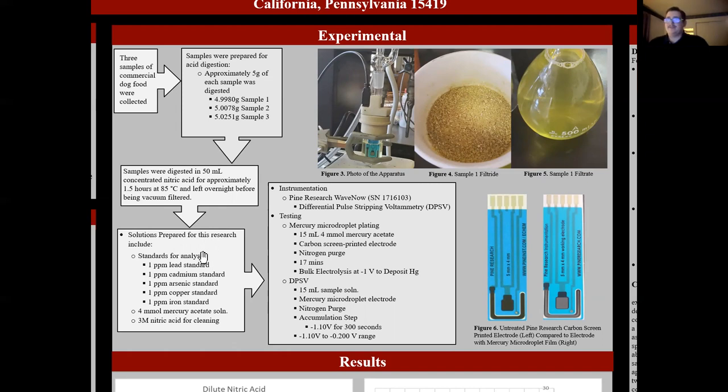Solutions were then prepared for this research, including a one ppm lead standard, a one ppm cadmium standard, a one ppm arsenic standard, a one ppm copper standard, and a one ppm iron standard. Other solutions made include four millimolar mercury acetate for electroplating to the electrodes, and a three molar nitric acid used for cleaning all of the sample vials.